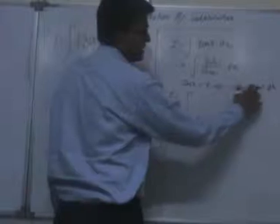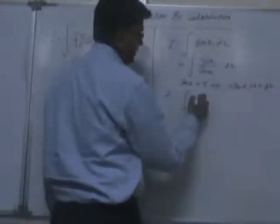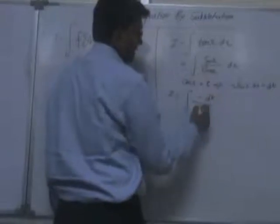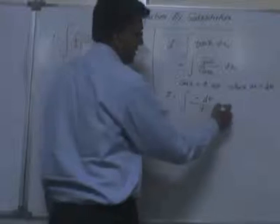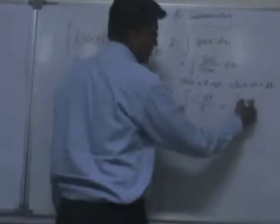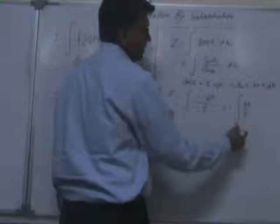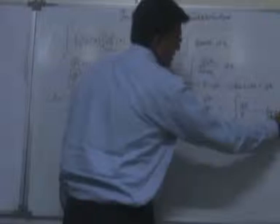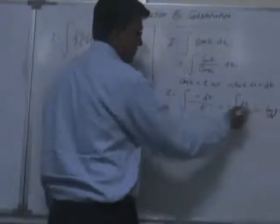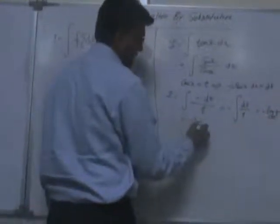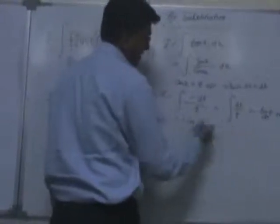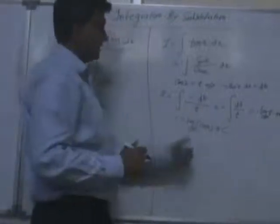So our original integration becomes: in place of sin(x) dx we write minus dt, and in place of cos(x) we write t. So the integral becomes minus dt over t, or minus one-third the integral of dt over t. This integrates to minus log(t) plus c, and substituting back, we get minus log(cos x) plus c.